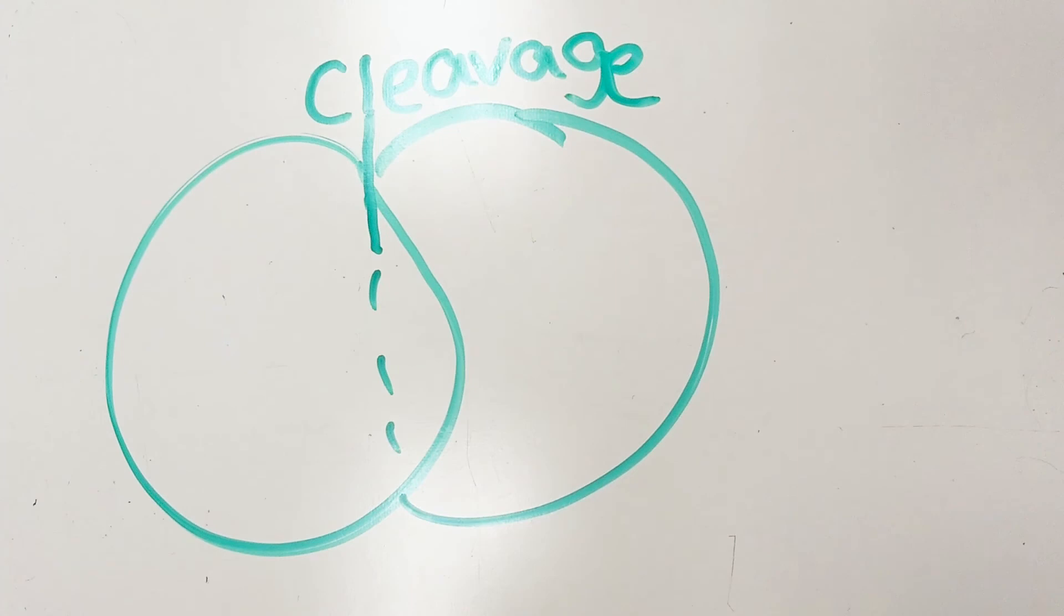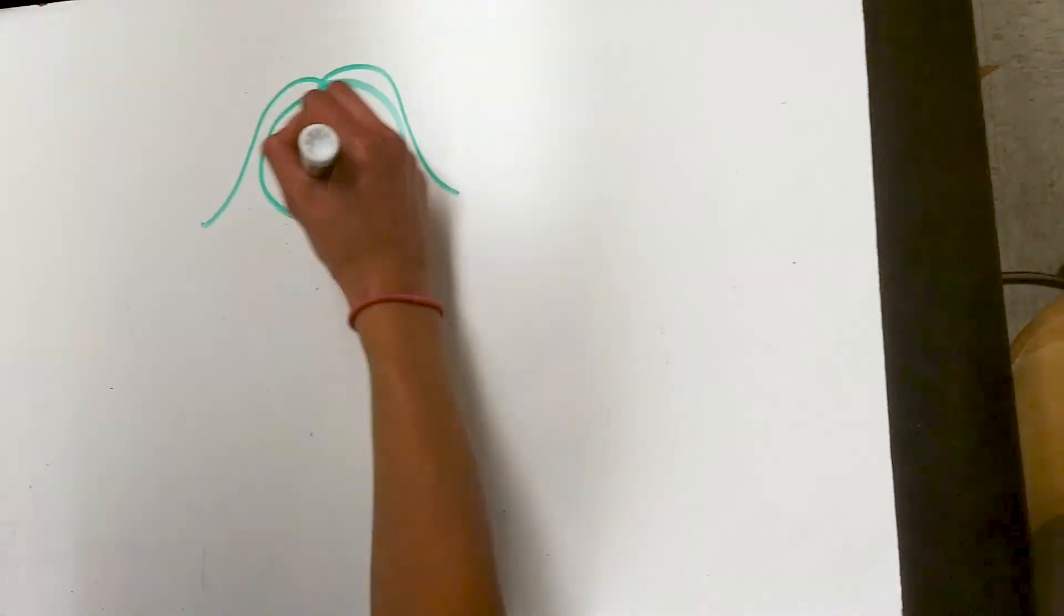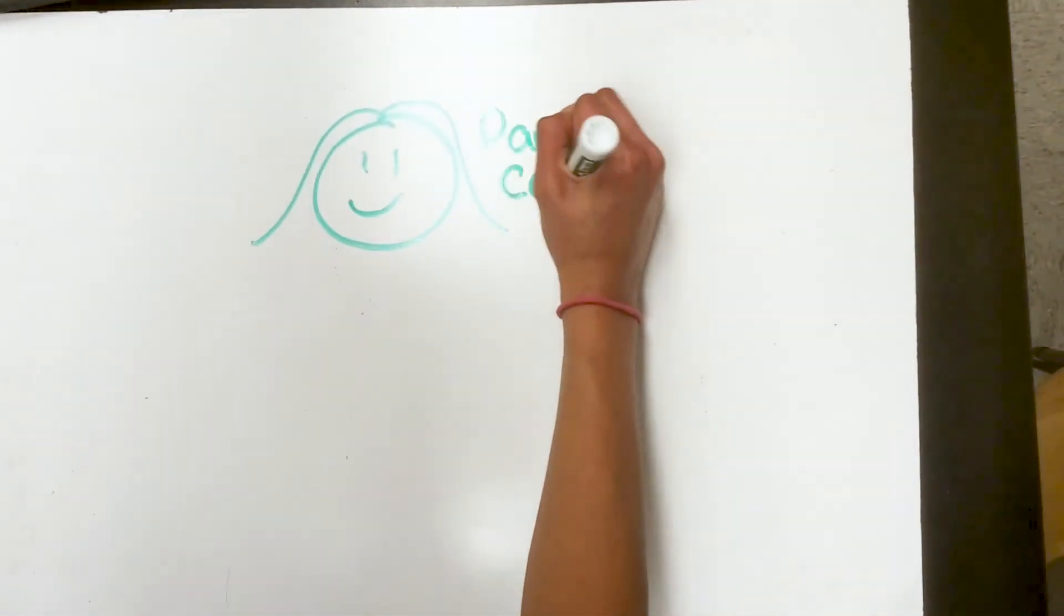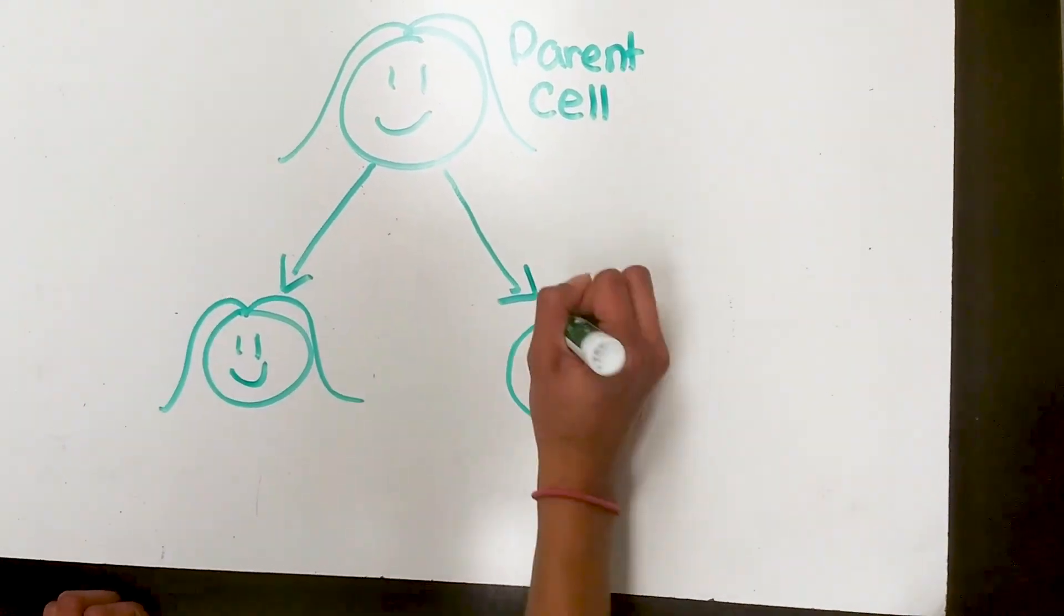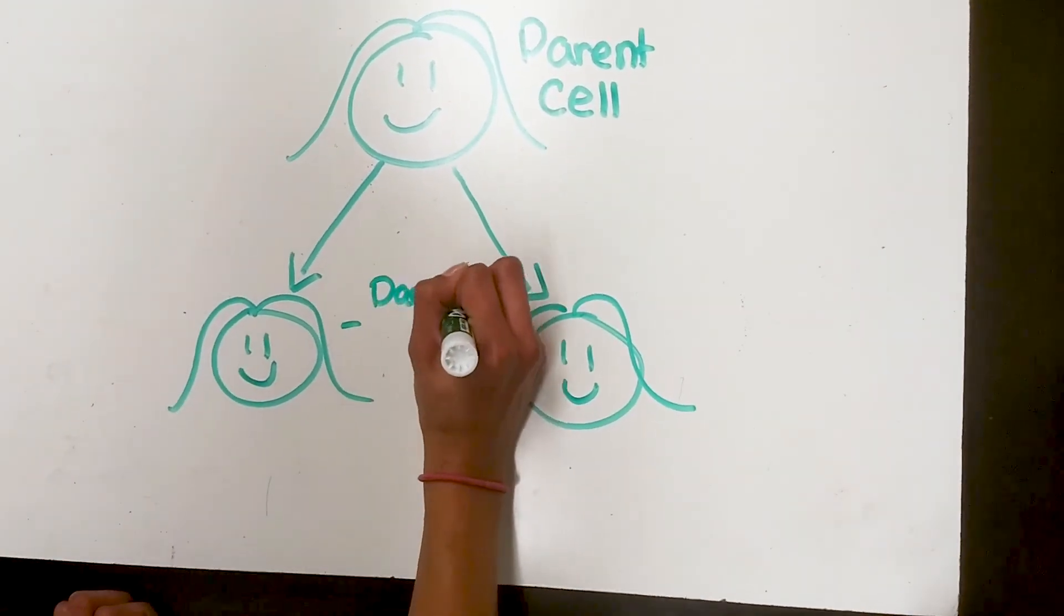This forms two separate daughter cells. When cells divide, they create a perfect clone. The cell and its clone are now called daughter cells and are identical to the parent cell, the cell before its split.